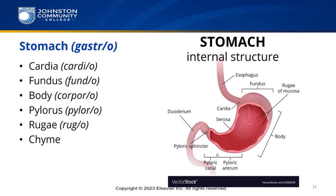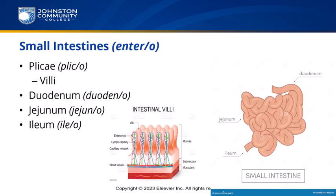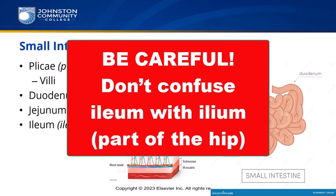The stomach is lined with ridges called rugae. The main function of the small intestine is the absorption of nutrients from the chyme. The intestinal structure has folds called plicae containing thousands of tiny projections termed villi, which hold blood capillaries that absorb carbohydrates and protein digestion products. The three sections of the small intestine in order are the duodenum, jejunum, and ileum. Be careful: ileum with an 'e' is the digestive section; ilium with an 'i' is part of the hip.